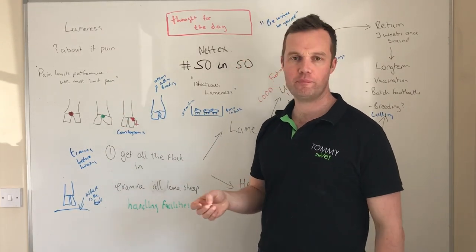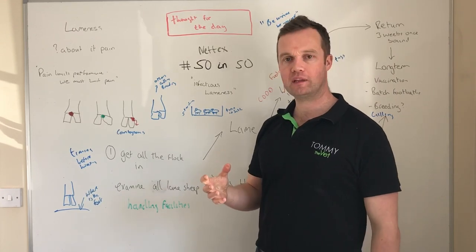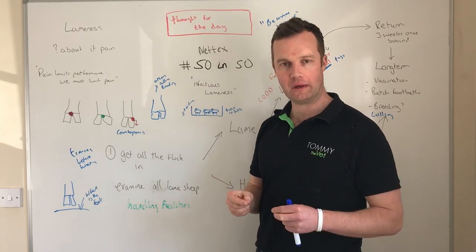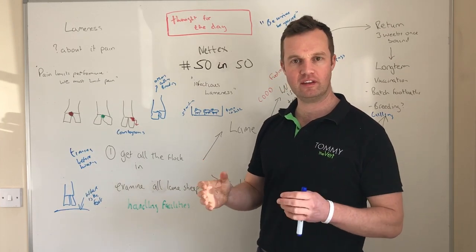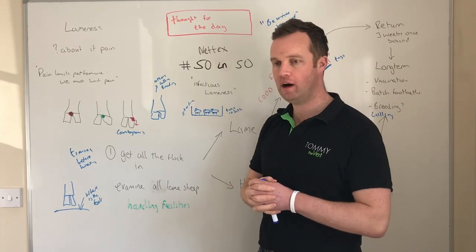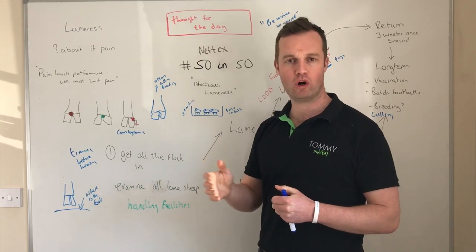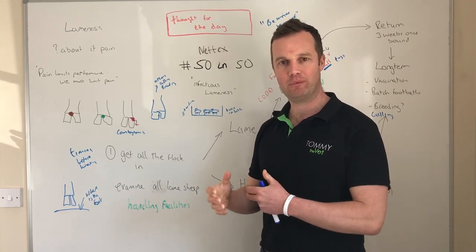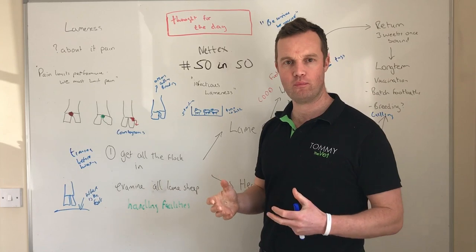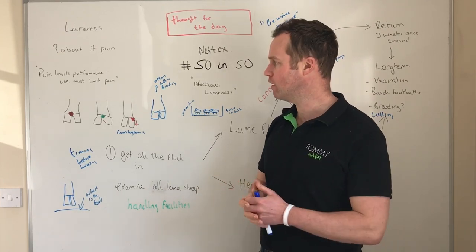We must limit pain in our production systems, both from a welfare perspective and a performance perspective. I remember going to a sheep meeting talking about lameness and I had a little bag of stones. I said to the farmers: if I put a stone in each of your shoes and asked you to walk around for the day, think of the pain that would cause — we must associate that same pain with our animals.